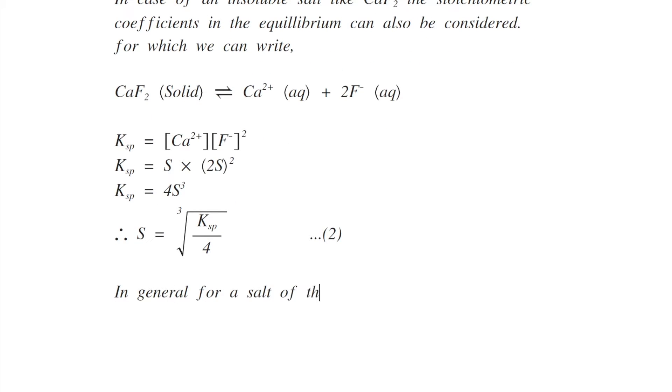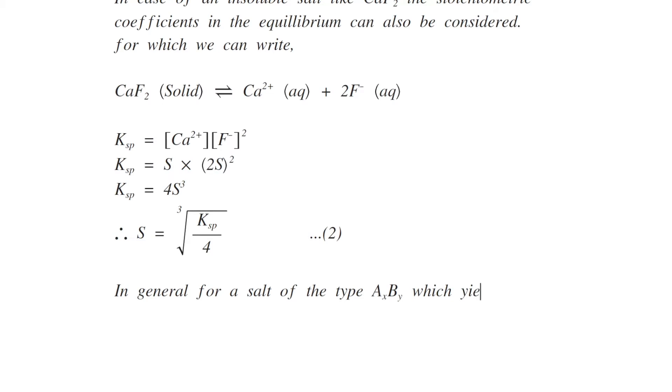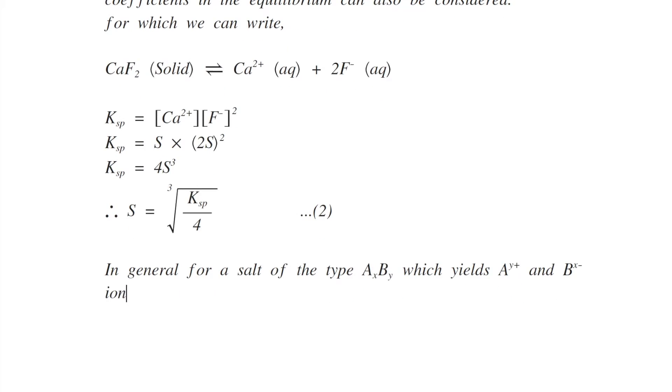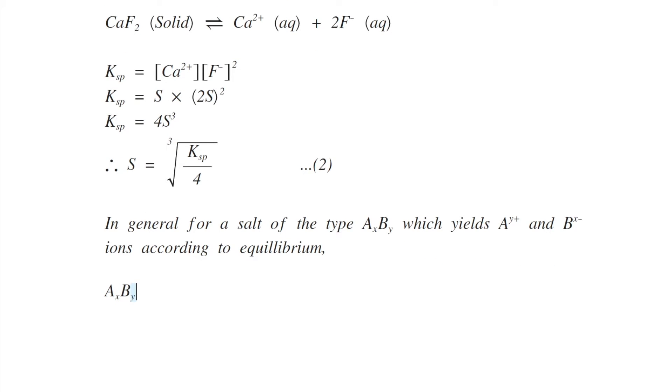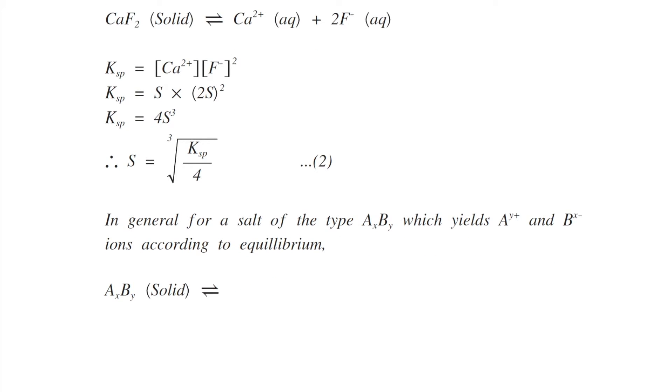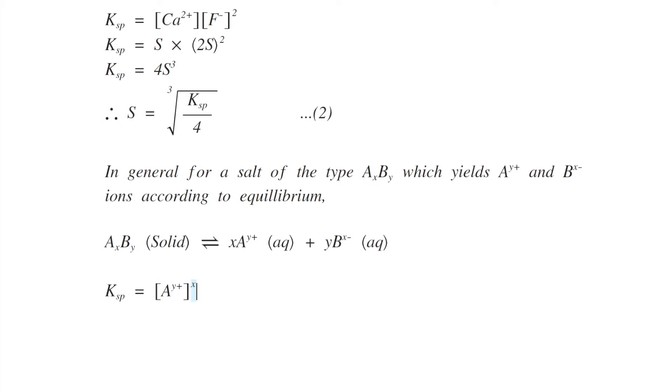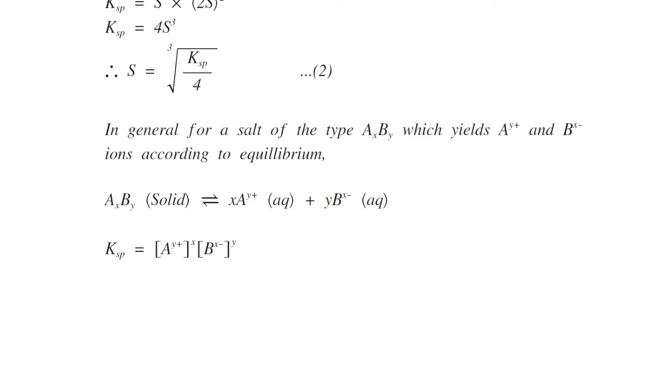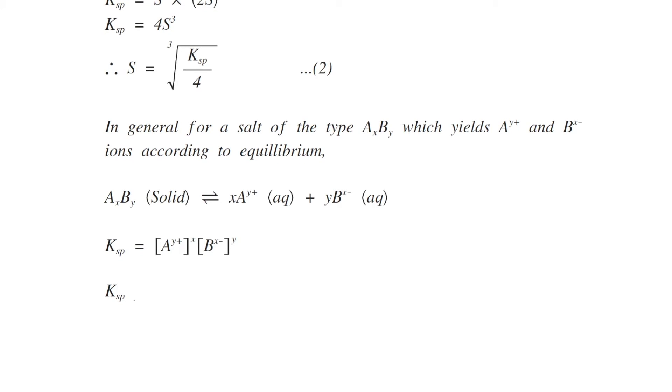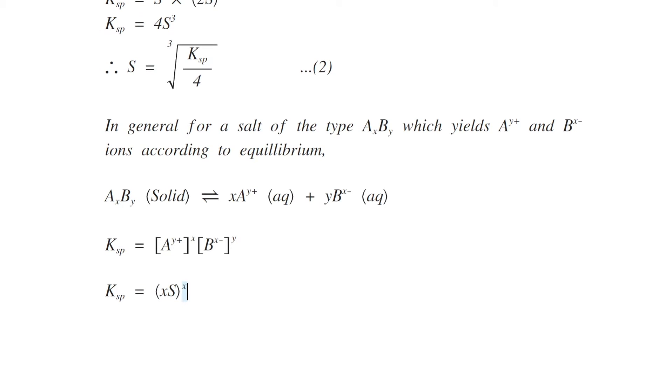In general, for a salt of type AₓBᵧ which yields Aʸ⁺ and Bˣ⁻ ions according to equilibrium, AₓBᵧ solid produces xAʸ⁺ aqueous plus yBˣ⁻ aqueous. Therefore, Ksp equals [Aʸ⁺]ˣ [Bˣ⁻]ʸ.